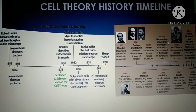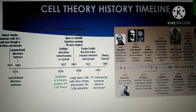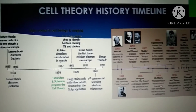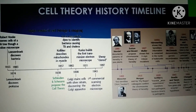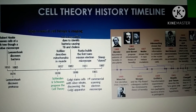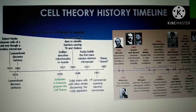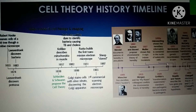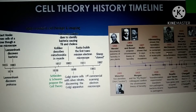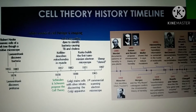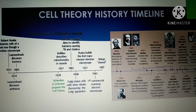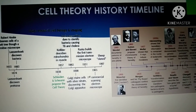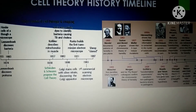Hammerling showed that hereditary information is contained in the nuclei of eukaryotic cells. In 1928, Griffith's transformation experiment explained how non-pathogenic bacteria can be transformed into pathogenic ones. In 1931, McClintock demonstrated genetic recombination in corn. There are many vast discoveries in cell history.